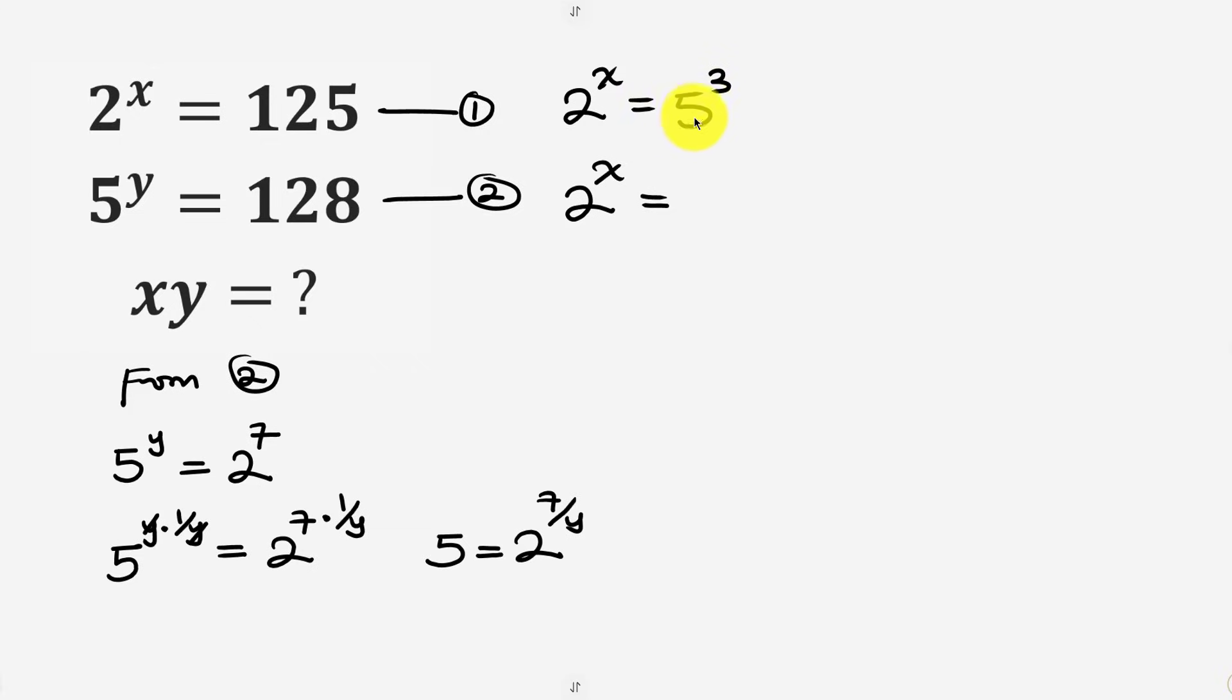So in place of this 5 I'm going to be putting 2 to the power of 7 over y. Very good. And it is raised to power 3 so I'm going to be raising this to power 3. Now we apply the law of indices that says that when I have a to the power of m and this is raised to another power of n, this is equal to a to the power of m times n. That means we're going to be multiplying this power and this power.